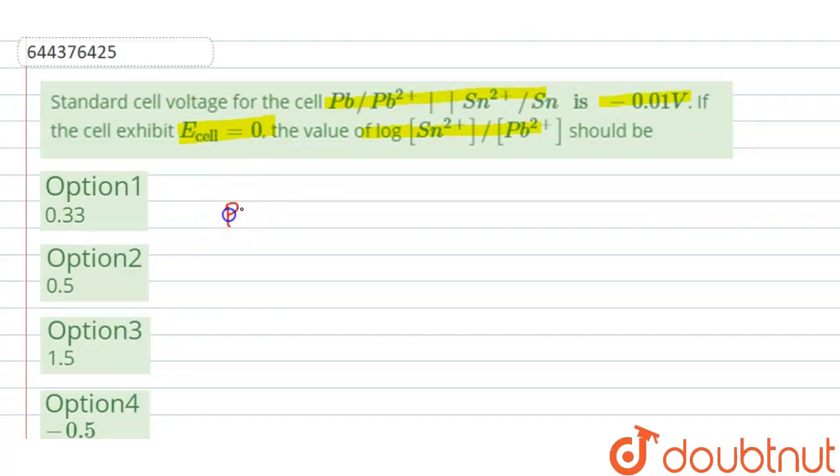If we write this cell: Pb | Pb2+ || Sn2+ | Sn. For this reaction, the E° cell, which is the standard cell voltage, is given as minus 0.01 volt.